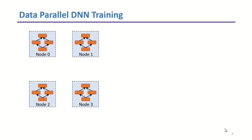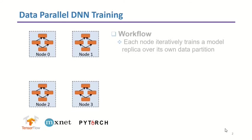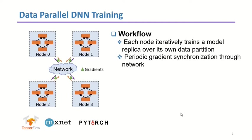As DNN model training is resource-hungry, Data Parallel is a major approach of parallelizing DNN training over a large number of GPUs, and has been adopted in popular DNN systems like TensorFlow, MXNet, and PyTorch. In Data Parallel training, each GPU node maintains a model replica and trains on its own data partition. Gradients will be produced and synchronized among all nodes when processing a mini-batch of data to trigger the following training steps.